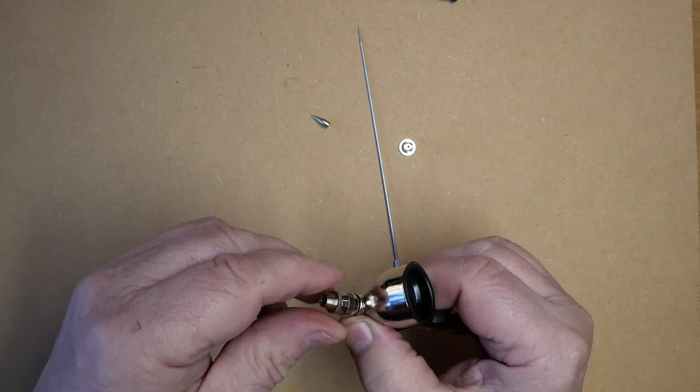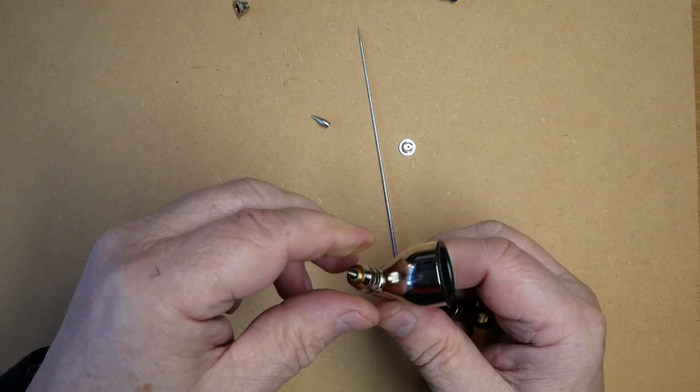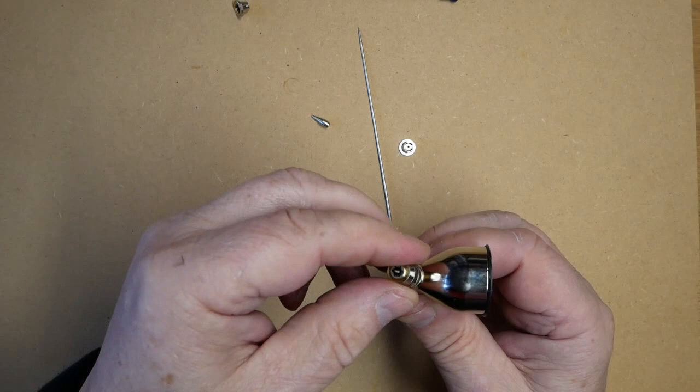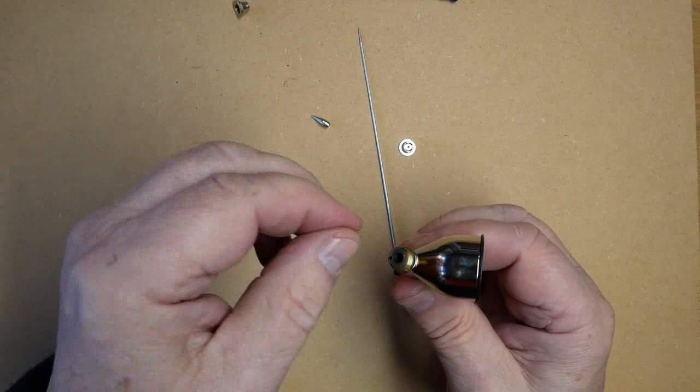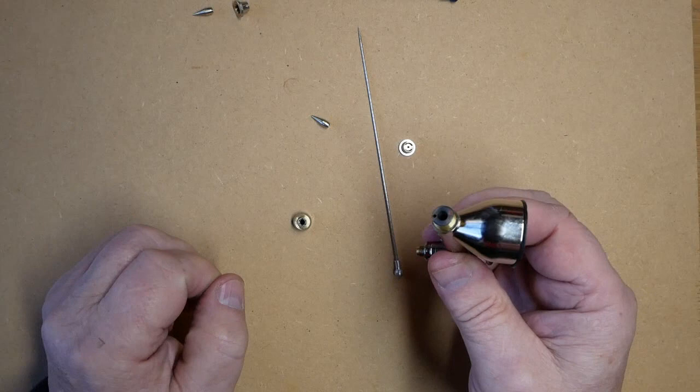Then the air cap, which holds the tip in place. With these parts, it's always a good idea not to mix them up and keep them separately, because you cannot mix and match these parts—the airbrush will not work.